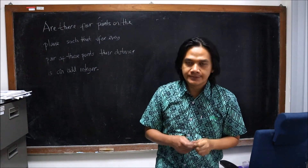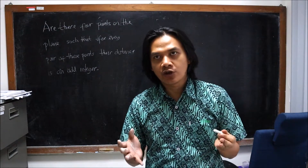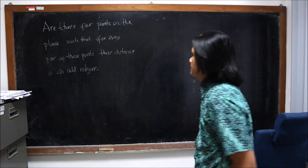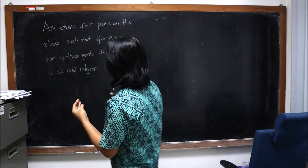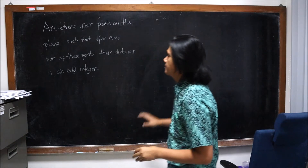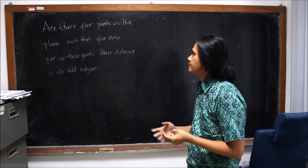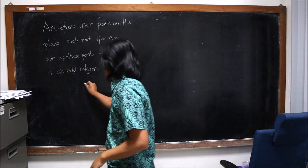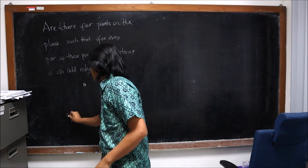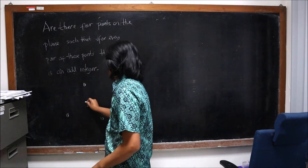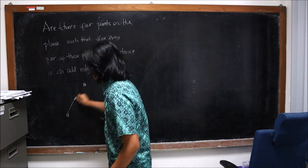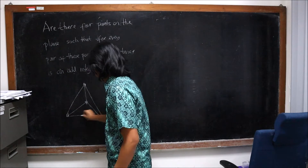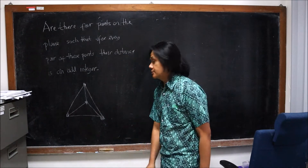Welcome back again to the channel. On this video we're going to discuss this interesting problem. The question is: are there four points on the plane such that for every pair of these points their distance is an odd integer? So the distance between any two are all odd integers.